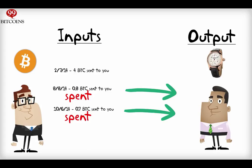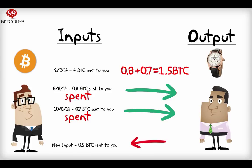So if for example I wanted to send the seller one bitcoin, and the only input or reference I have is from someone who previously sent me 1.5 bitcoins, I will have to use all of this input and return the change back to my original address as a new input. So I will use my 1.5 bitcoins input, pay 1 bitcoin to the seller, pay a miners fee, and return the rest to my original address.